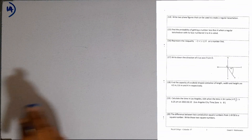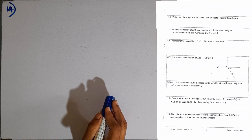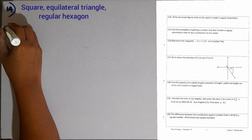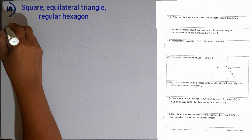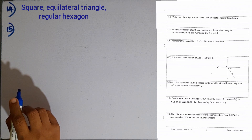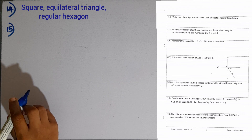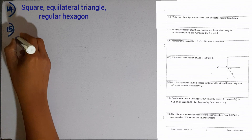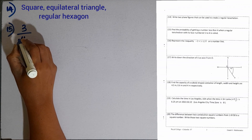Question number 14. Write two plane figures that can be used to create a regular tessellation. Square, equilateral triangle and regular hexagon are the three plane figures we can use to create a regular tessellation — name any two. Question number 15. Find the probability of getting a number less than 4 when a regular tetrahedron with faces numbered 1 to 4 is rolled. There are three numbers less than 4, so the probability is 3 over 4.